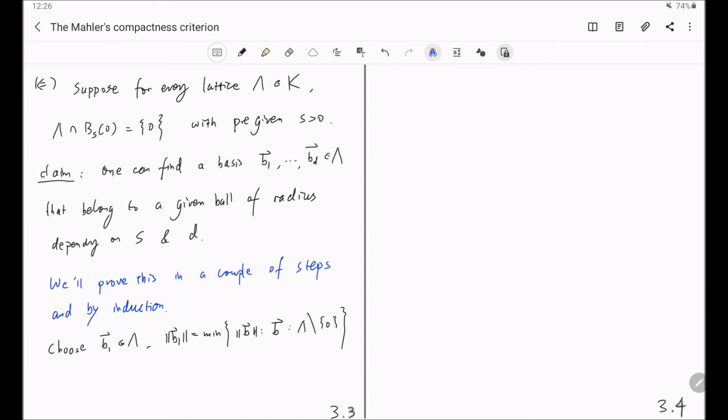And it follows from our assumption on lambda that the norm of b_1 is at least s. And furthermore, the integer multiples of b_1 is equal to lambda intersection the line through b_1.